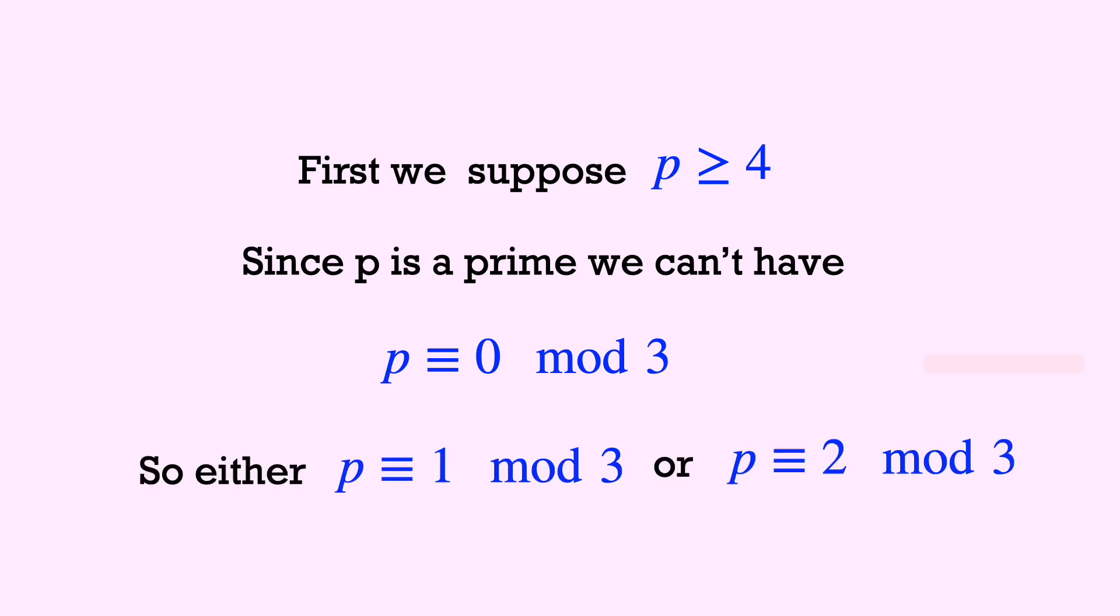So the remainder must either be 1 or 2. That is, p is either congruent to 1 or 2 modulo 3. Let's take each case separately.